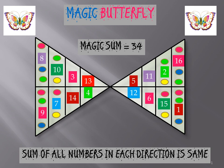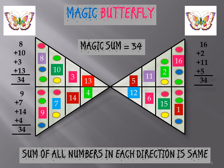Hey guys, I am going to show you a magic butterfly of numbers. Its magic sum is 34 — you can see it contains numbers. I am saying this is a magic butterfly because if you sum all the numbers in each direction, you will get the same sum. Look: if I add 8, 10, 3, and 13, the sum is 34. Similarly, 9, 7, 14, 4 also make a sum of 34.